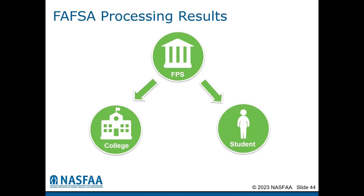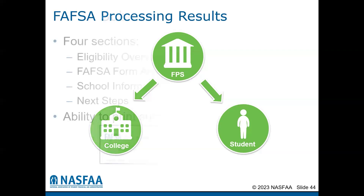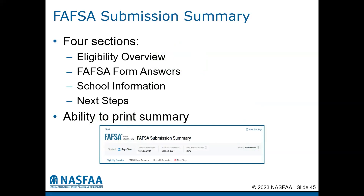The school receives this information electronically in a document called the Institutional Student Information Record, or ISIR. The student will receive an electronic copy of their FAFSA submission summary. Your FAFSA submission summary will contain four sections: an eligibility overview, a summary of the answers submitted on the FAFSA form, the college or university information submitted by the student, and potential next steps that may need to be taken.